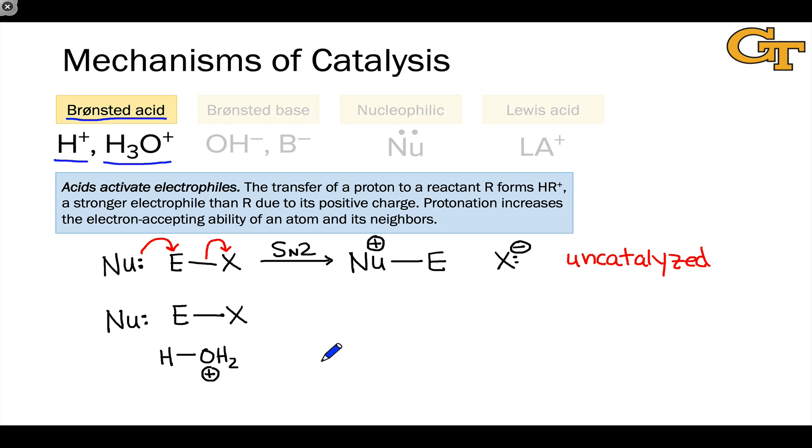The foundational principle to understand how Bronsted acids work in reaction mechanisms is that acids activate electrophiles. In fact, the same is true of Lewis acids, and we'll see that in a later video. Acids activate electrophiles. This means that the acid catalyst engages with the electrophile to facilitate an elementary step. In other words, to lower the activation energy of an elementary step that follows.